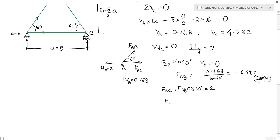You know FAB, so determine FAC. FAC which will be equal to minus FAB cos 60 plus 2. You have got FAB and FAC. One member force is remaining.